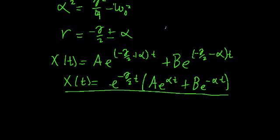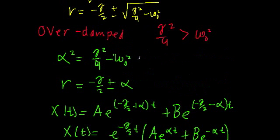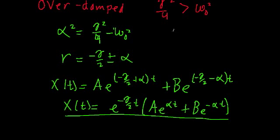And the other important thing is, since we defined alpha in this particular way, we're going to find that the absolute value of gamma over two is going to be greater than the absolute value of alpha. And the reason why that's important is that means that this exponential out front is going to dominate, so this will describe an exponential decay.